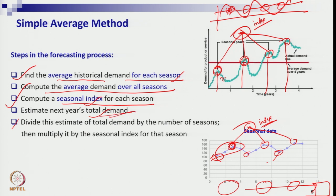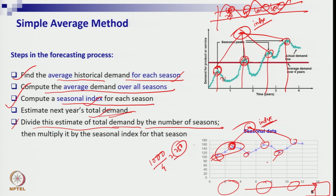In summary: divide the annual demand estimate by the number of seasons — for four quarters, divide by four. If annual sales are 1000, each quarter gets 250 on the straight trend line. That is the deseasonalized forecast. Then multiply each quarter's value by its seasonal index to bring the seasonality back and get the zigzag final forecast. Let us illustrate through a numerical example.